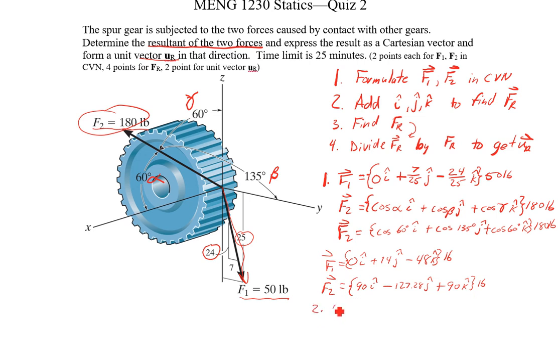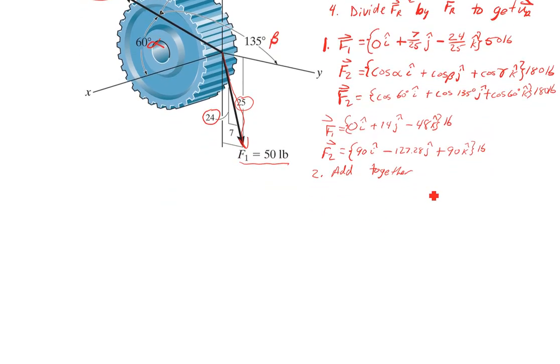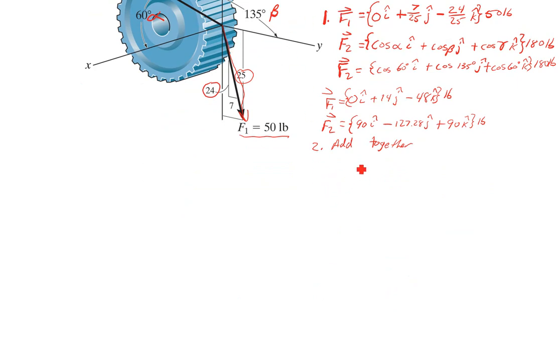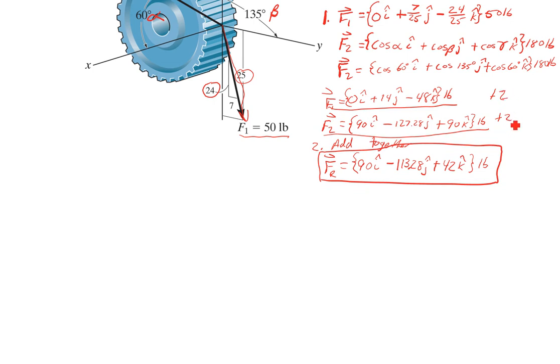Step 2, add them together. I'm going to scroll down here a little bit. So I'm just going to add my I's, my J's, and my K's together, and that will get me FR. So 0 plus 90 is 90 I. Negative 127.28 plus 14, it's going to get me negative 113.28 J. And then 90 minus 48 is positive 42 K, and that's pounds. So there's my FR value. These are my CVN formulations, so I should get plus 2 here, plus 2 here, that should give me plus 4.